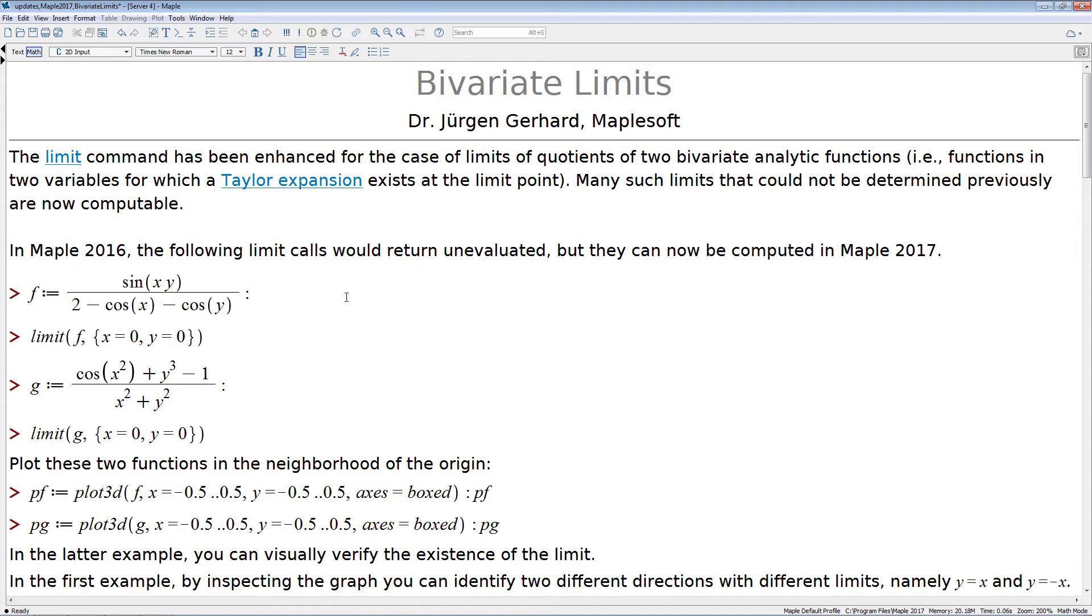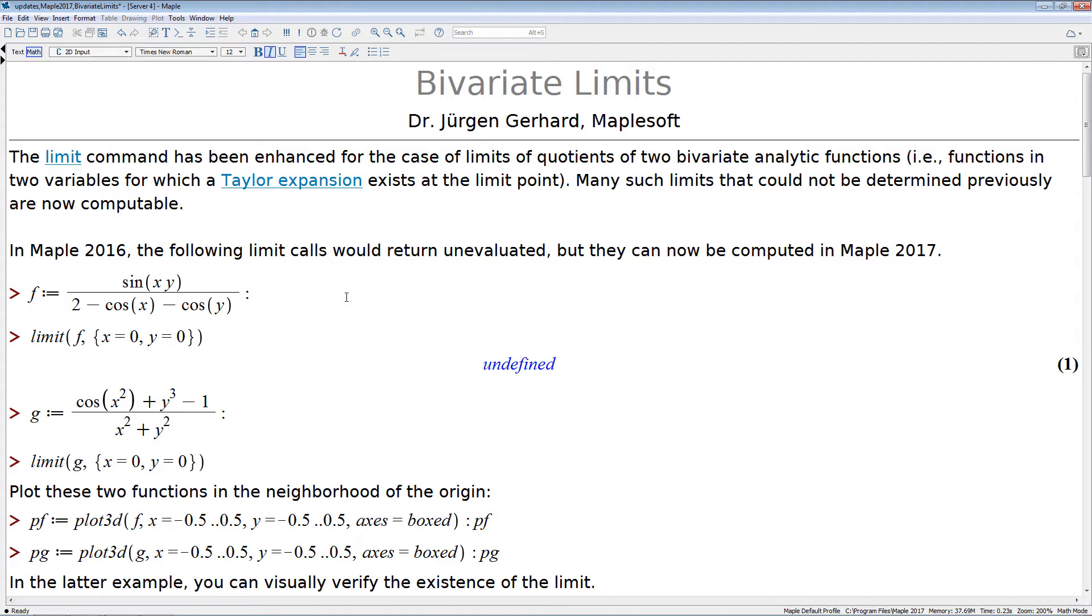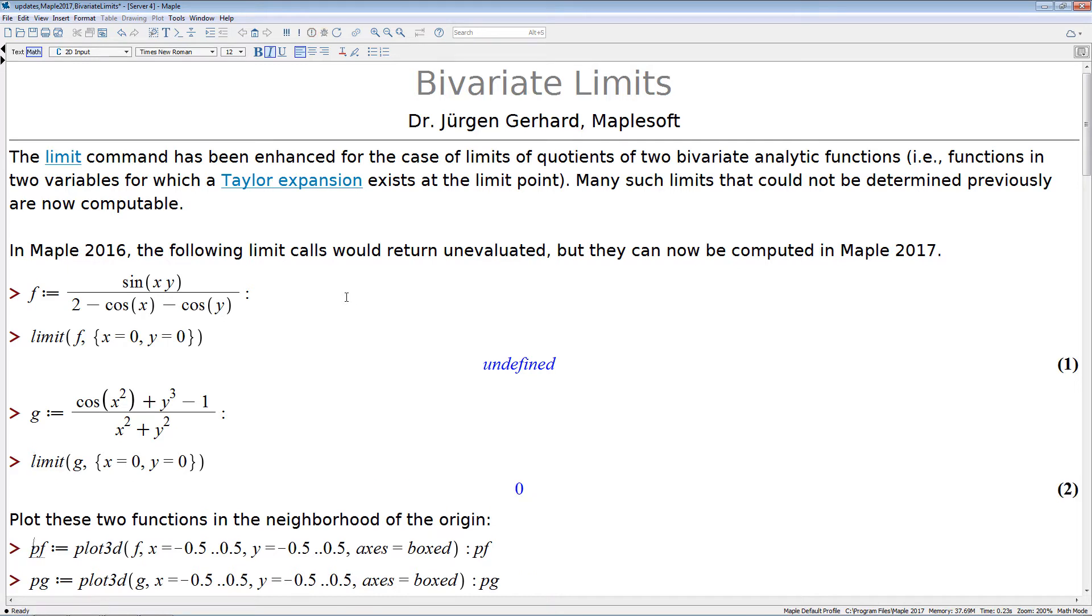So let's look at this first function f here. Just hit the enter key to evaluate it and then we compute the limit of it at the origin. And the limit is not defined, and so for the moment we have to believe that, but Maple actually has a proof for that and we will see in a moment why. And here's another example function g where we also compute the limit at the origin and the limit exists and it is zero.